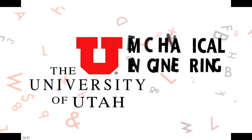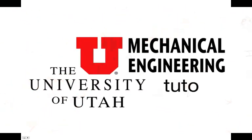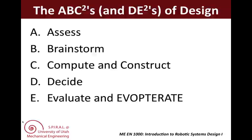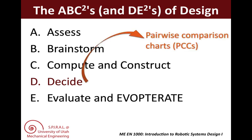Hi, this is Dr. Bamberg. Welcome back to our series on the ABCs of Design for the University of Utah's ME 1000 class. Today we will be talking about the decide phase of design. There are two design tools that you will learn about and use in ME 1000. The first tool is pairwise comparison charts, or PCCs, and the second tool is the decision matrix. You will use PCCs for a variety of tasks in your upcoming design project, including to organize objectives for your design matrix.